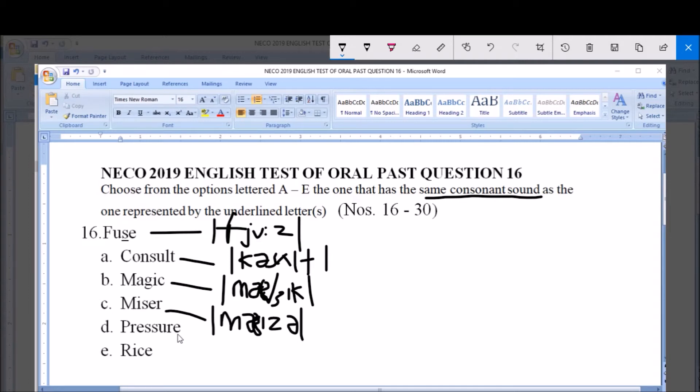Option D is pronounced as 'Pressure' - /preʃə/.